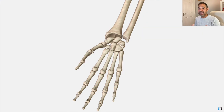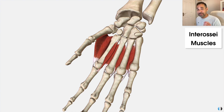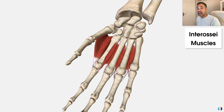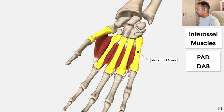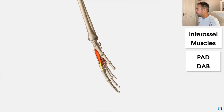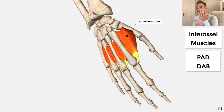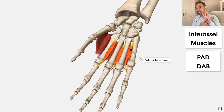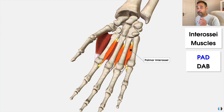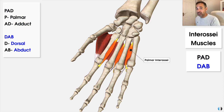Next we have a memory aid for the interossei muscles of the hand — in particular, how do you remember what the different groups of muscles do? Just remember PAD, DAB. The interossei muscles are a set of intrinsic muscles located between the metacarpal bones of the hand, separated into two key groups: the dorsal interossei located on the dorsum of the hand, and the palmar interossei located on the palmar side of the hand. PAD stands for palmar adduct, and DAB stands for dorsal abduct.